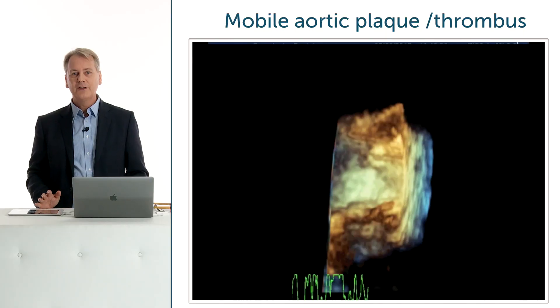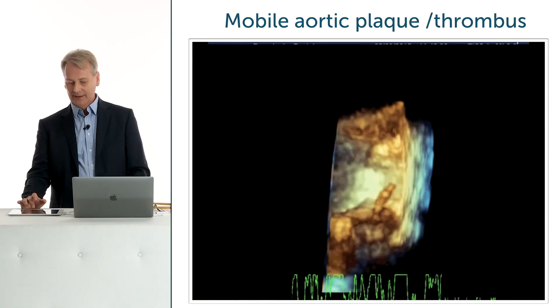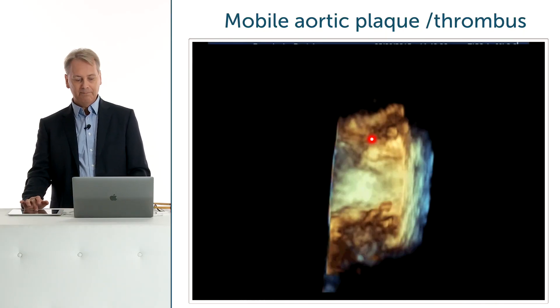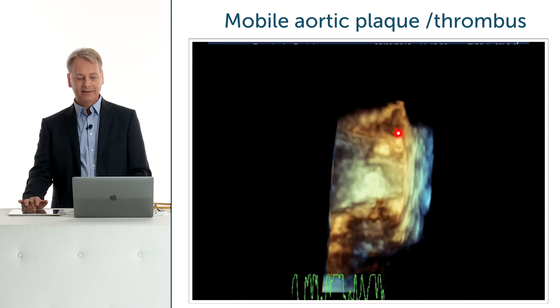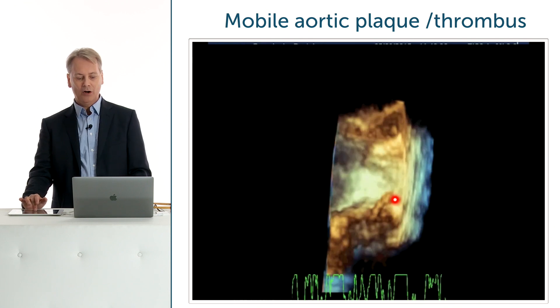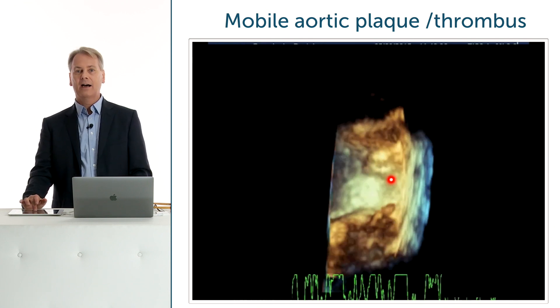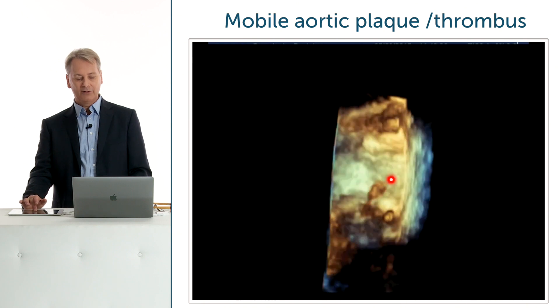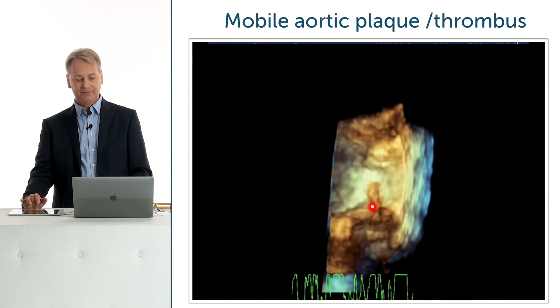We're using 3D not only in the heart, but also for the aorta. A patient who had massive atherosclerotic plaques — this is the aortic wall — and on one of these plaques we have a highly mobile structure, probably a thrombus.